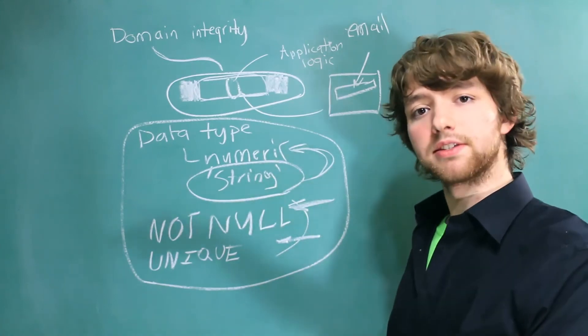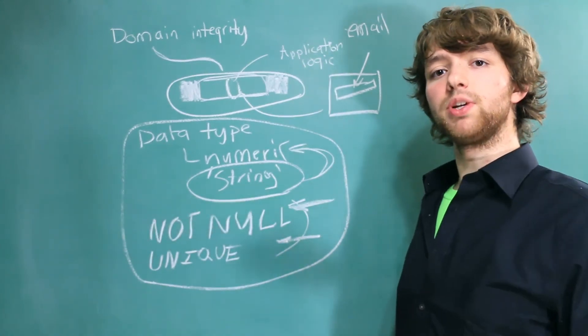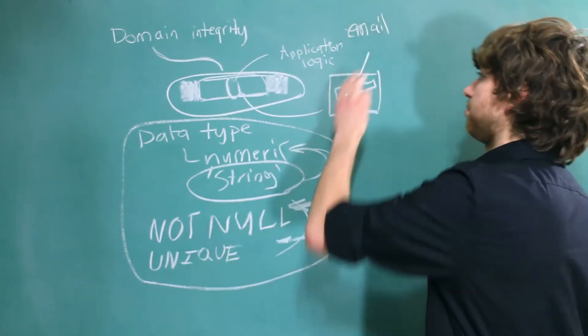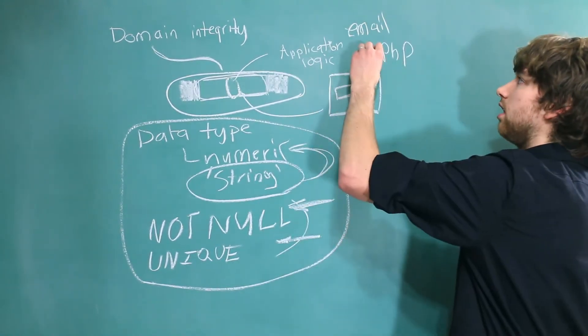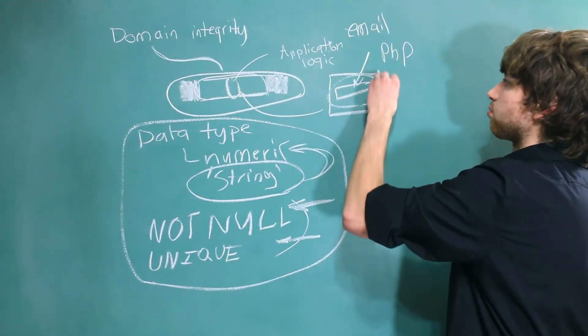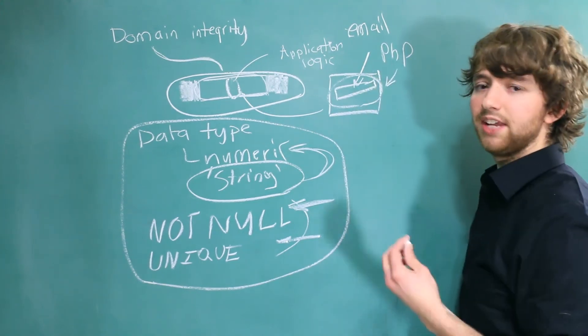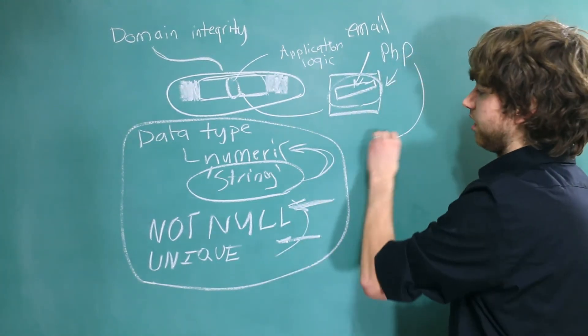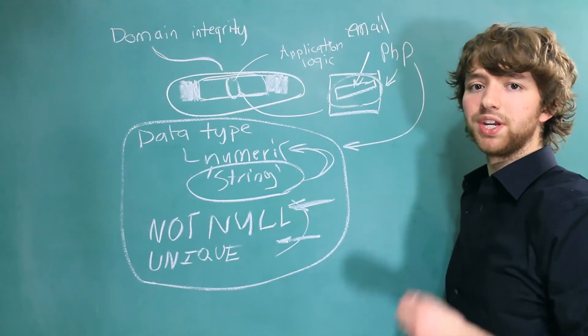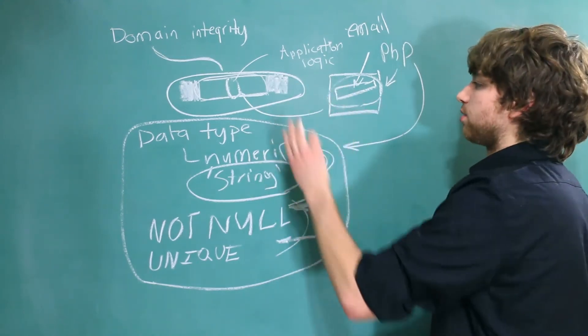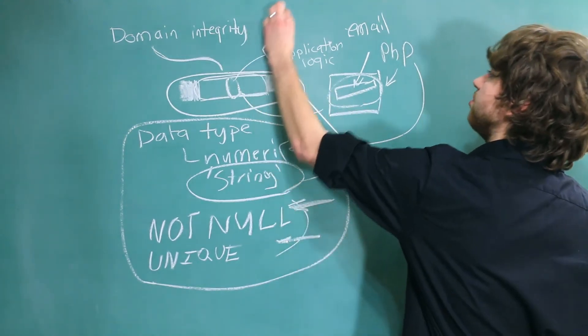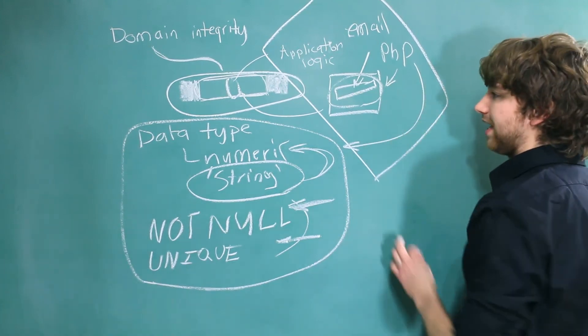Then, even if someone bypasses that by modifying the HTML, we can have server side code, such as PHP, check the data and see is this really an email? And if it is, then we can store it into the database. If it's not, we can return an error. So all of that goes outside of the database into the application. It's a separate thing.